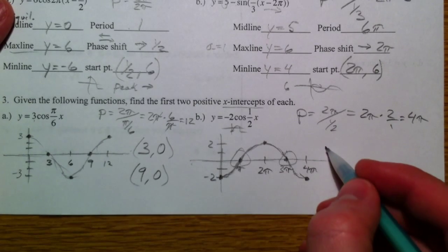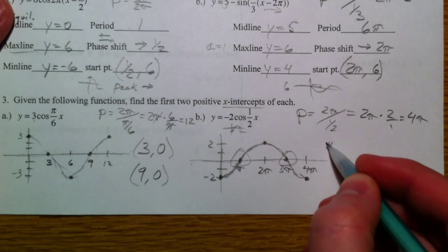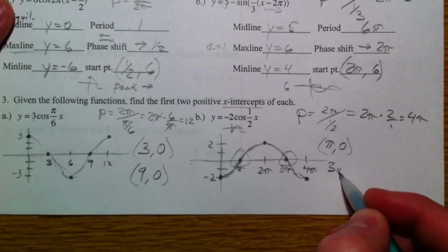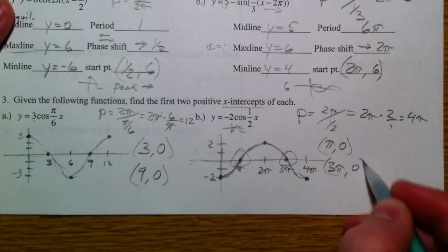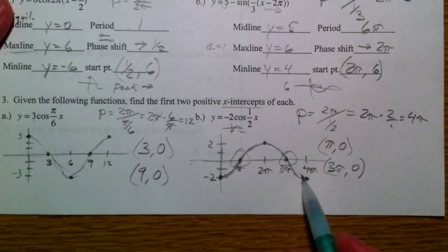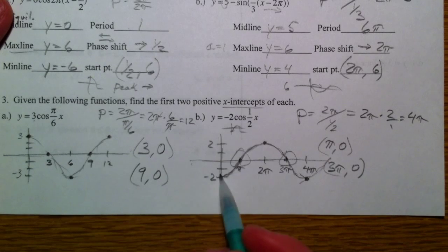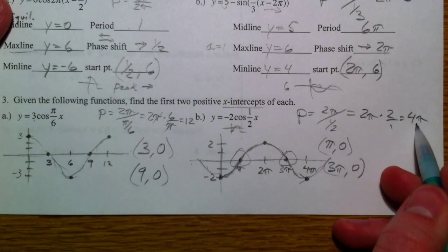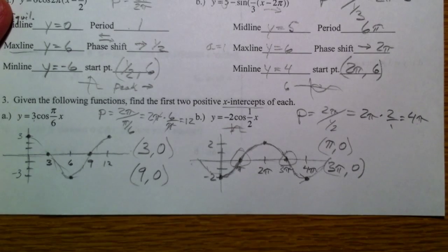We're looking for this point and this point. And, we have pi, 0. And, 3 pi, 0. We say first 2 because technically this is going to keep going. It's going to keep going until there are infinitely many more separated by every 4 pi. So, we'll keep going.